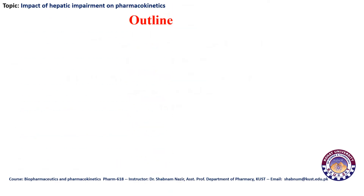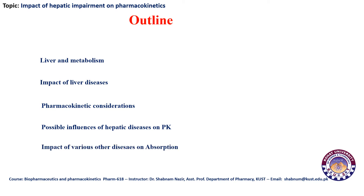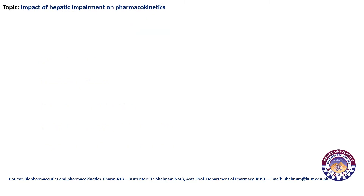In today's lecture we will discuss the liver and its impact on metabolism, then the impact of various liver diseases, their pharmacokinetic considerations, and possible influences of hepatic diseases on pharmacokinetics. We will also discuss other diseases and their possible impact on absorption, including Parkinson's disease, Crohn's disease, and celiac disease, as these have significant impact on pharmacokinetics, particularly absorption.